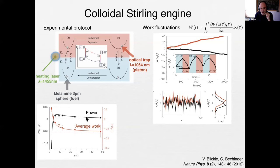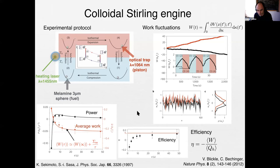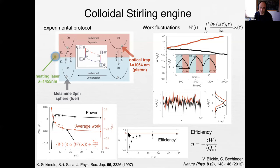But the power — the work divided by time — has an optimal value, not at slow driving but at an intermediate cycle time. There was a theory by Sekimoto and Sasa explaining this dependency, with a 1/τ correction to the free energy, which fits very nicely. Finally, you can take the average work and average heat to measure efficiency: the average stochastic work divided by the average stochastic heat from the hot bath. Going slower gives higher efficiency, but always below Carnot.